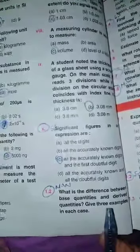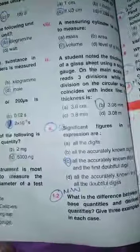So please open your book page number 25 for the question answers. Students, our first question is: what is the difference between base quantities and derived quantities? Give three examples in each case.